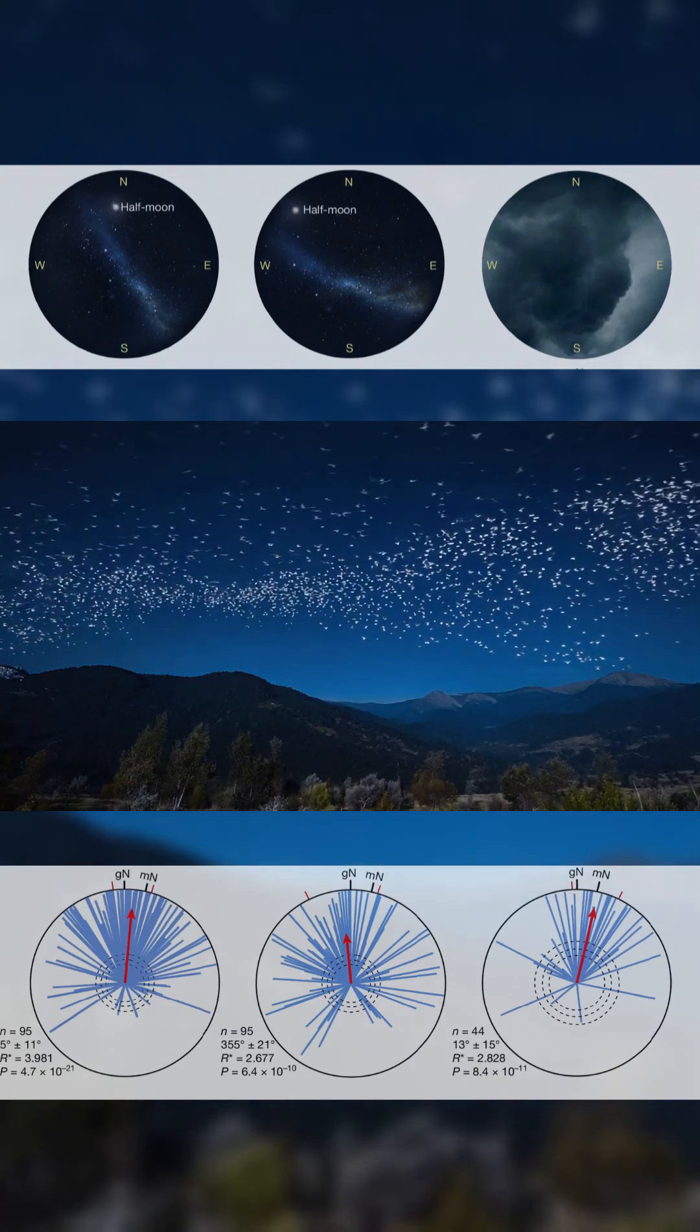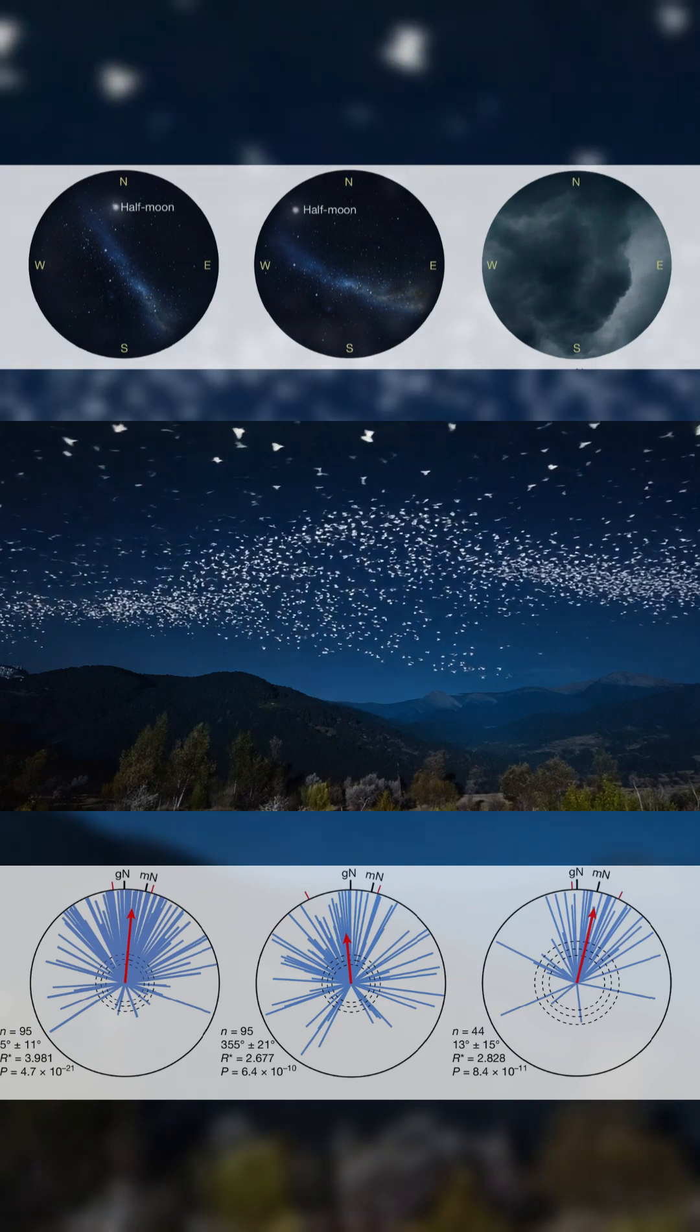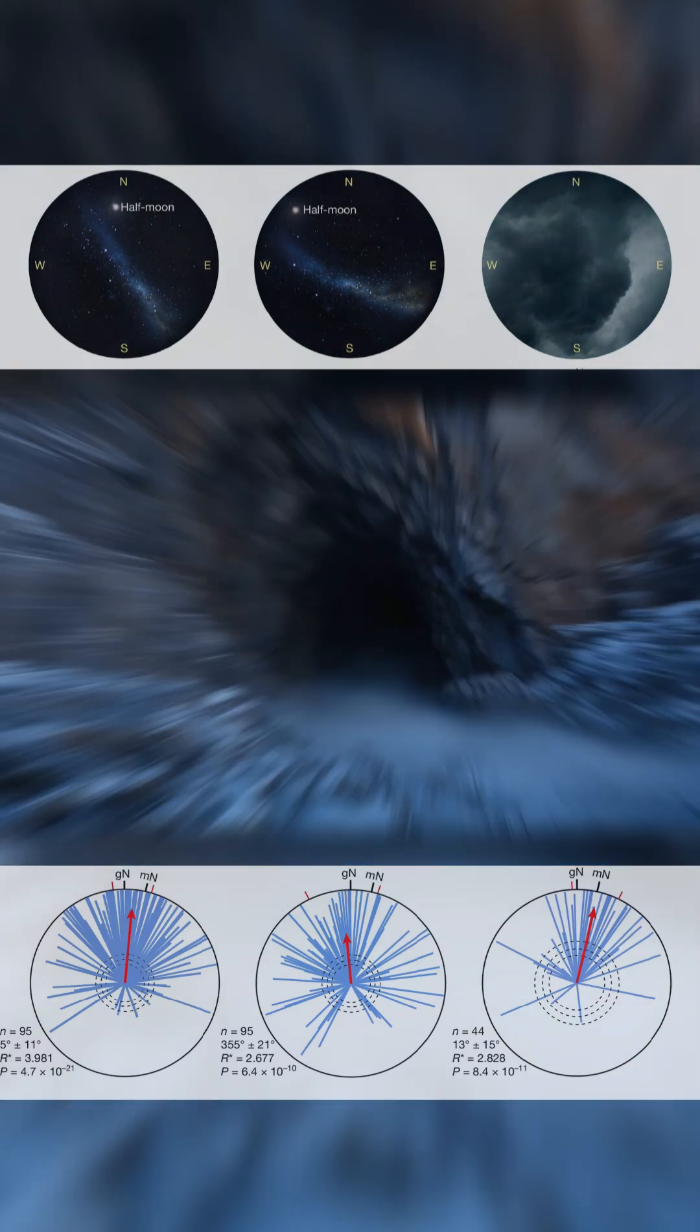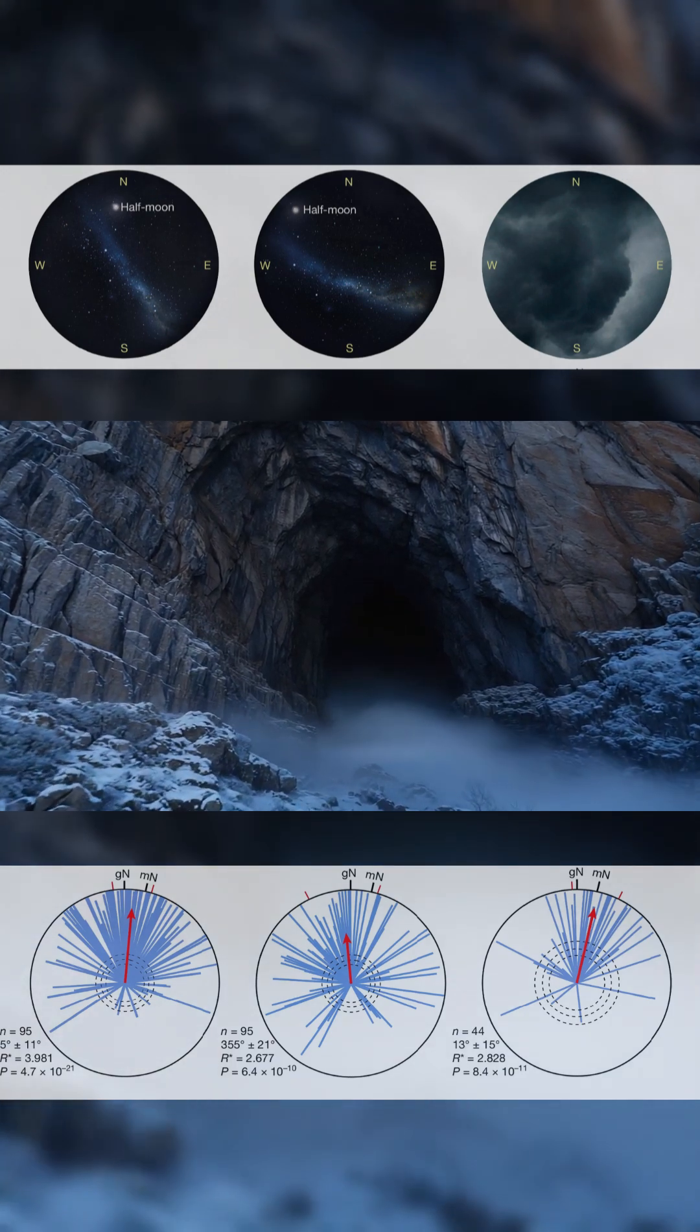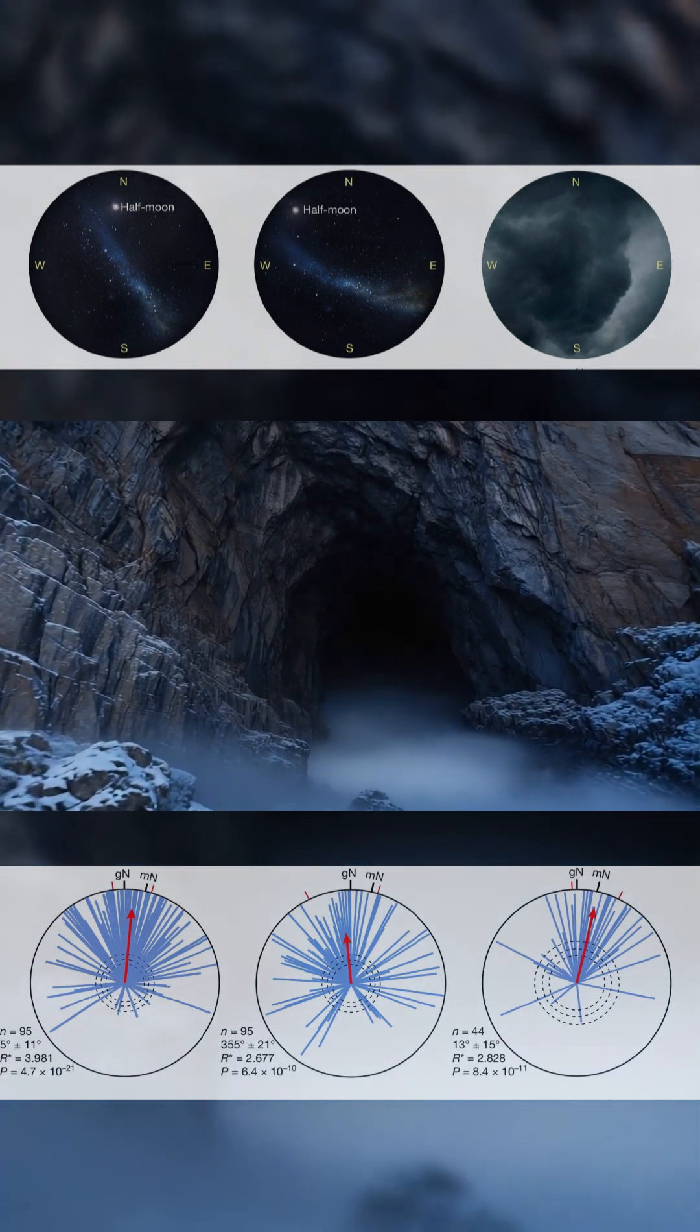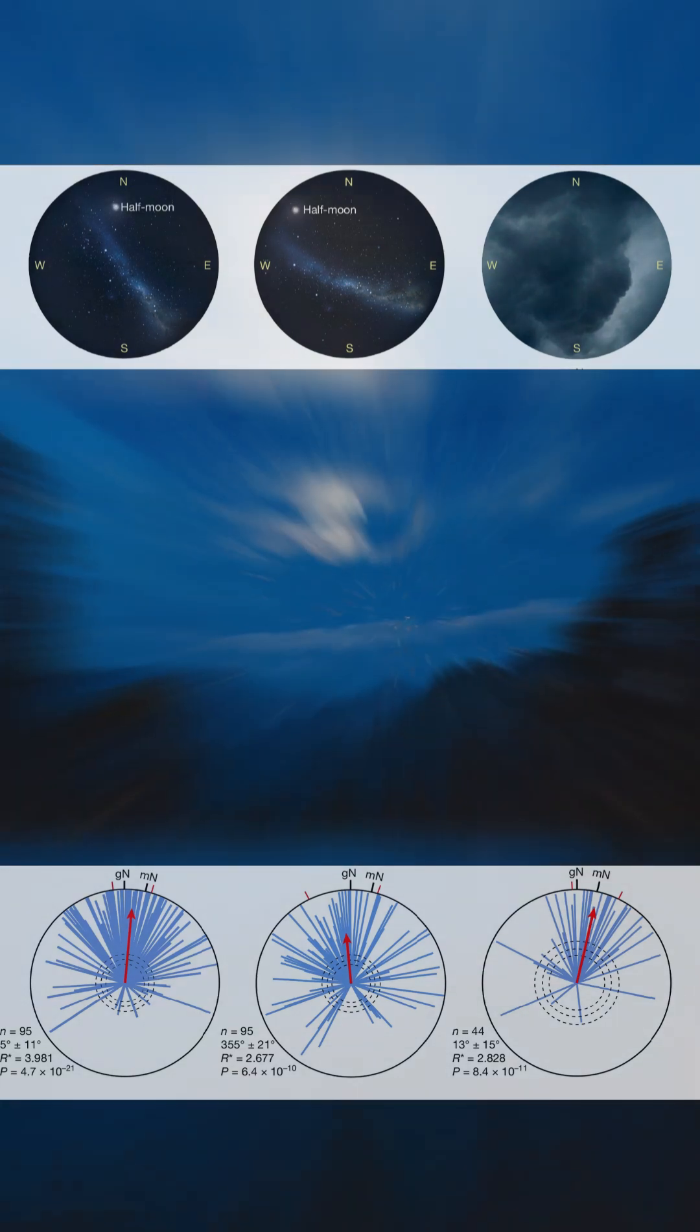Every year, billions of Bogong moths migrate across southeastern Australia to alpine caves they've never seen before. They travel alone, covering up to a thousand kilometers with remarkable precision. Each moth makes the journey once, then dies, leaving no opportunity to learn or return.